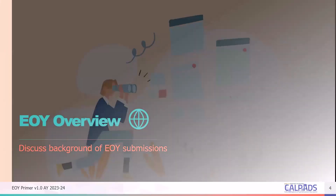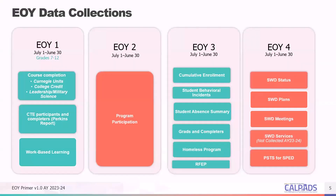Here we'll discuss some general and background information related to the end-of-year data submissions in CALPADS. This slide has the four CALPADS EOY data collections with a high-level view of the key data elements submitted in each. Unlike Fall 1 and Fall 2, end-of-year reports on the entire academic year from July 1st of the prior calendar year to June 30th of the current calendar year, which means any new students or students who have left during this timeline will be reported.